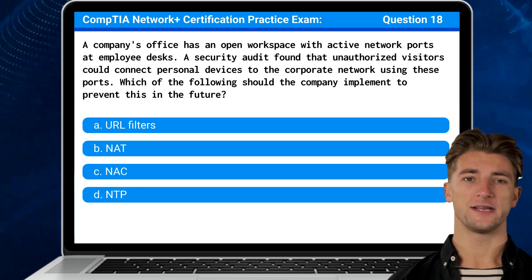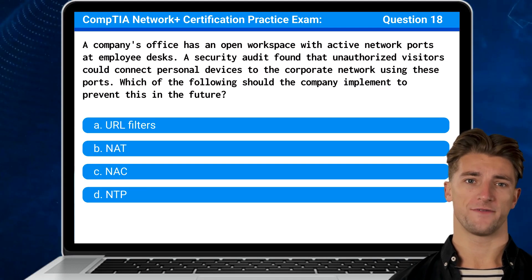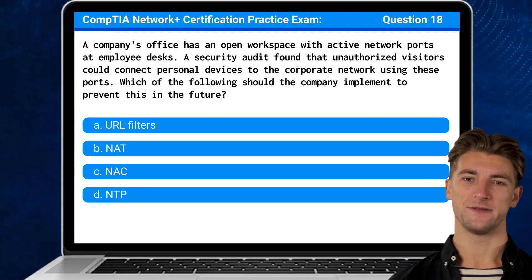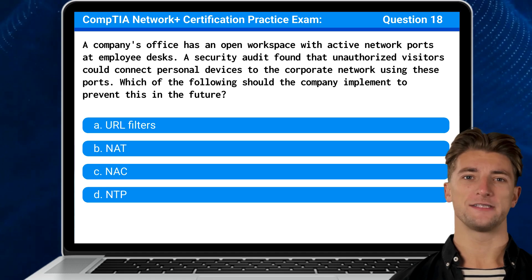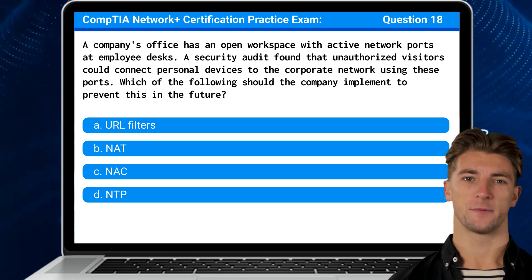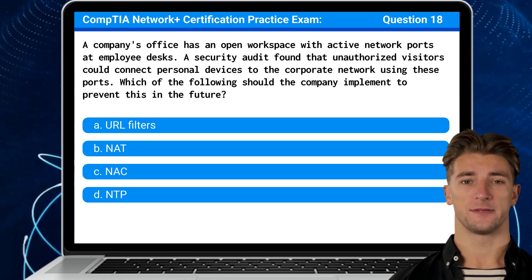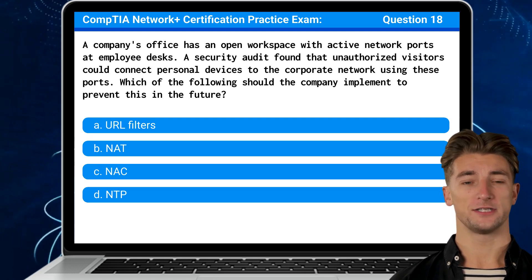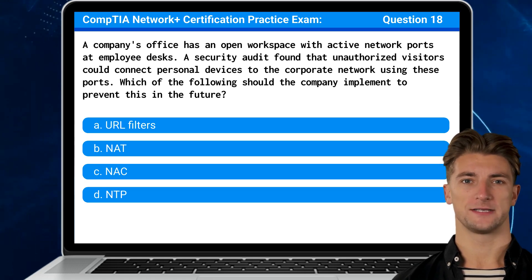Question 18. A company's office has an open workspace with active network ports at employee desks. A security audit found that unauthorized visitors could connect personal devices to the corporate network using these ports. Which of the following should the company implement to prevent this in the future?